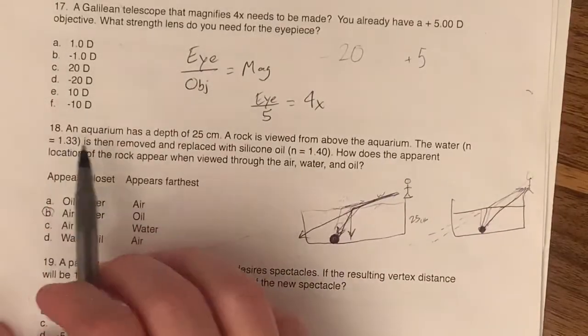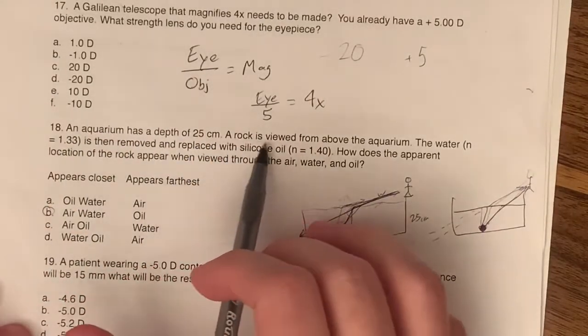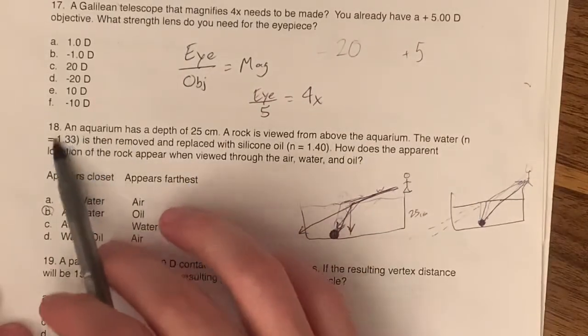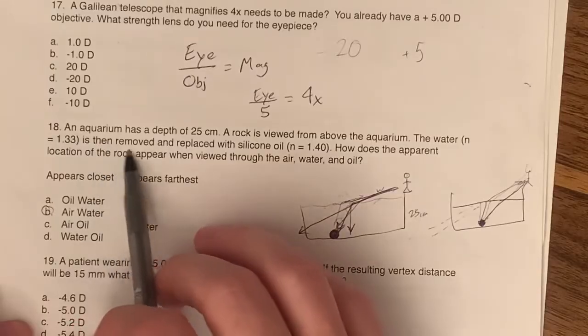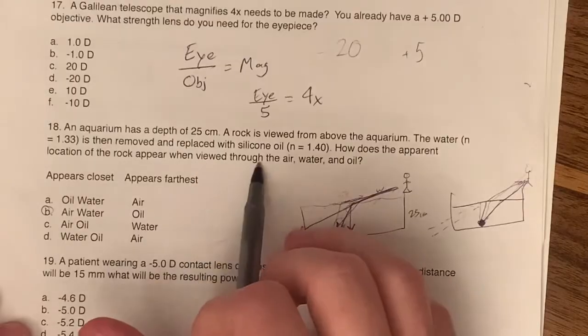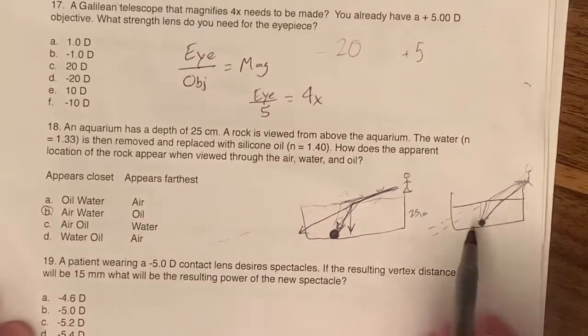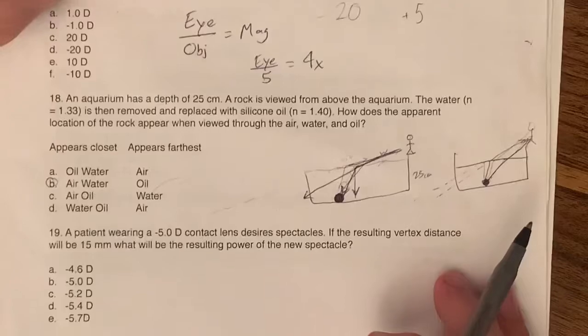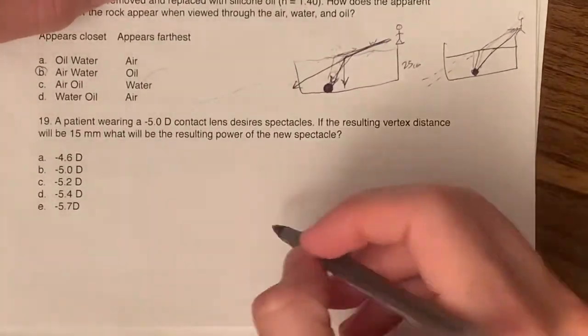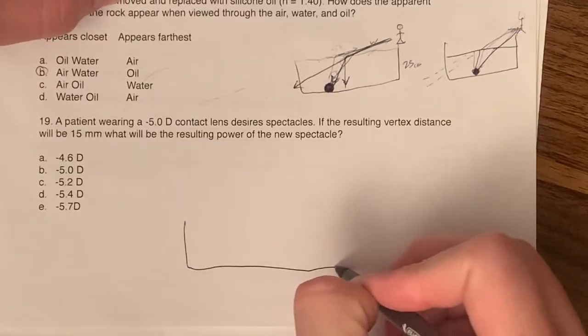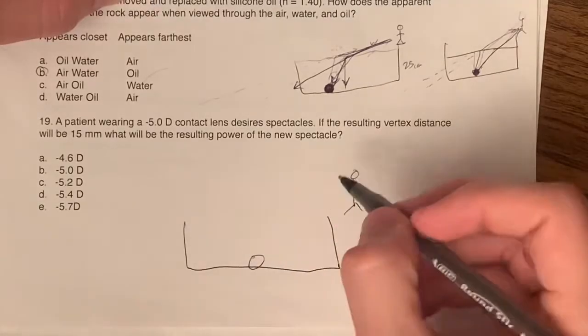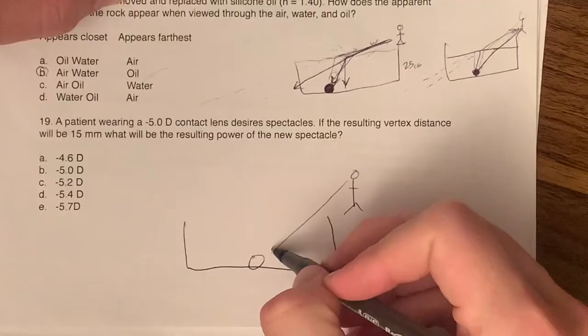Number 18, an aquarium has a depth of 25 centimeters. A rock is viewed from above the aquarium. The water, of course, with the index refraction of 1.33 is then removed and replaced with silicone oil 1.4. How does the apparent location of the rock appear when viewed through air, water, and oil? I've already drawn these out here when I did it before, but I'm going to do it again just to demonstrate things.